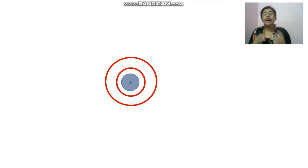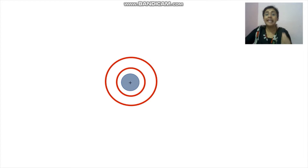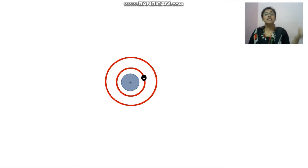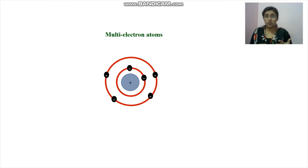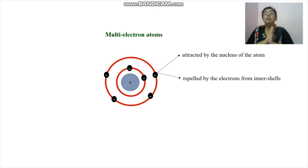Let's consider an atom with a central nucleus consisting of positively charged protons and neutral neutrons, with electrons around it. In a single-electron system, there is just one electron and it experiences an attractive force from the positively charged nucleus. In multi-electron systems, each electron is attracted by the nucleus but also repelled by the other electrons.